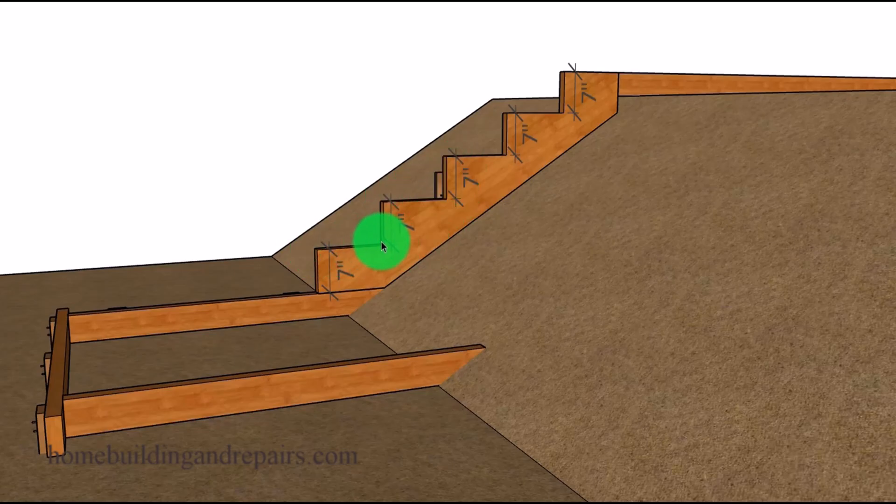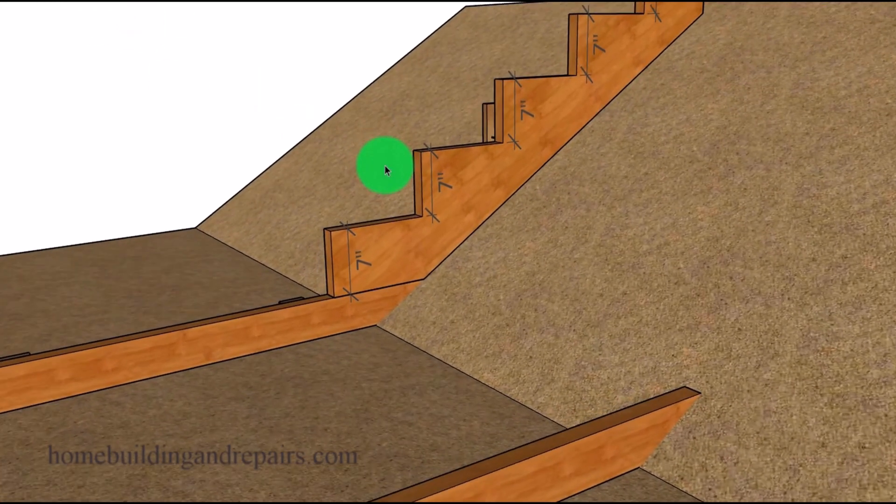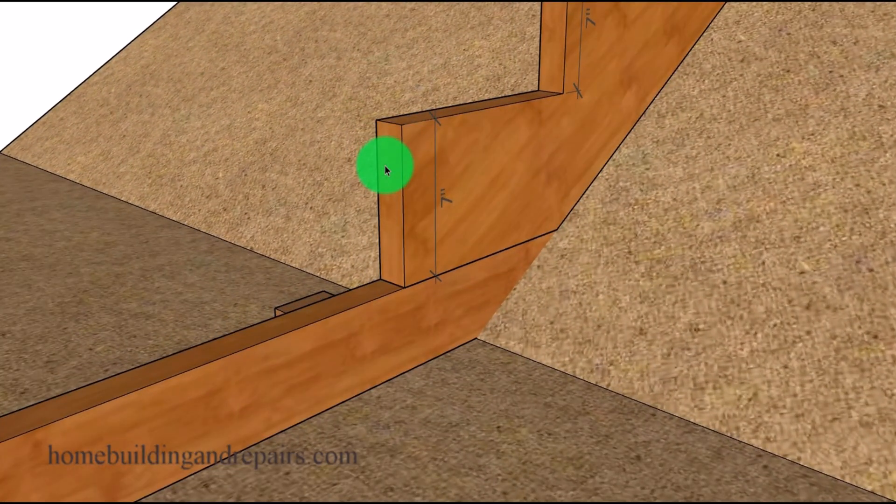We're going to have a 10 inch wide step, which there will be 4 of. 1, 2, 3, 4, 5 risers, 4 steps, and make sure that you put a level on top of the steps to make sure that they are level. That is going to be the most important part of building any stairway.